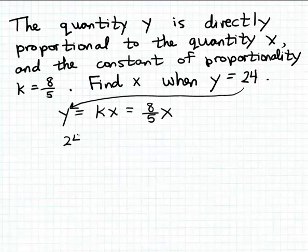And then simply solving the resulting equation for x. So we have that 24 is equal to 8/5 times x. And I just want to solve this equation for x.